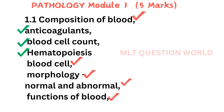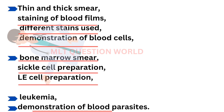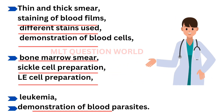The first module is pathology, which carries 5 marks. Basic hematology — that is, blood, anticoagulants, blood cell count, hematopoiesis, etc. Videos are already done on these topics. You can check from the playlist.